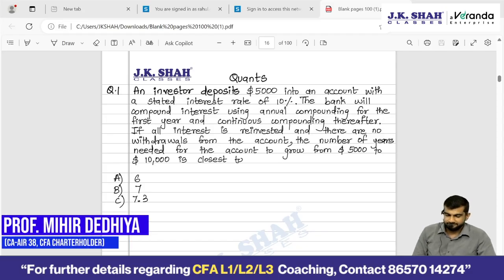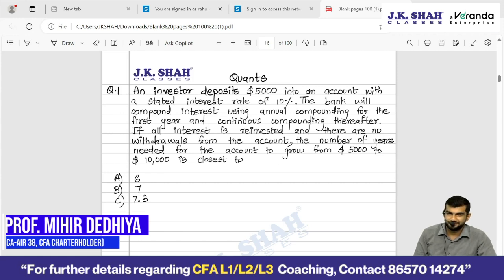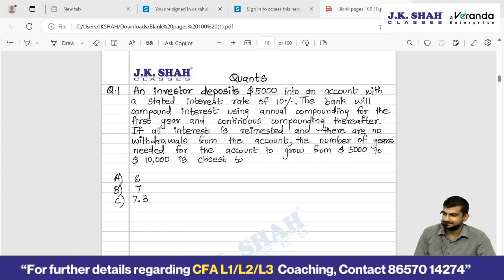A very warm welcome. So we solve today quants, yes start solving. An investor deposits $5,000 into an account with a stated interest rate of 10%. The bank will compound interest using annual compounding for the first year and continuous compounding thereafter. If all interest is reinvested and there are no withdrawals from the account, the number of years needed for the account to grow from $5,000 to $10,000 is closest to?